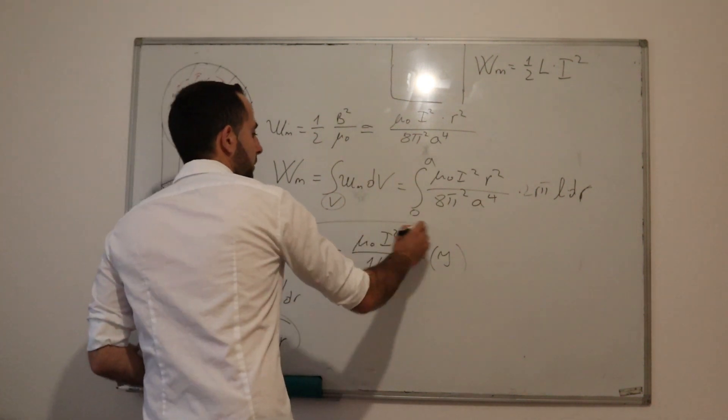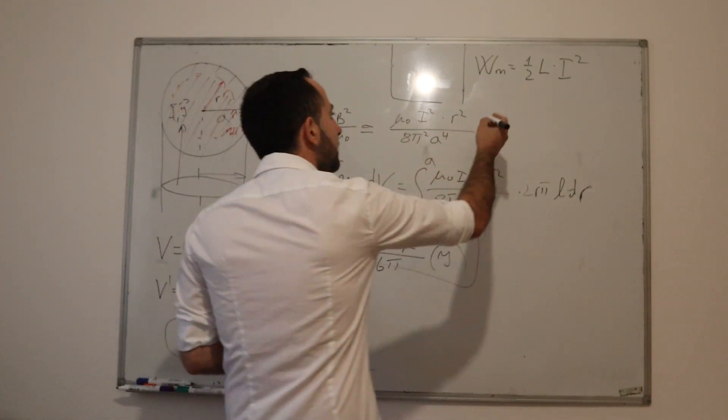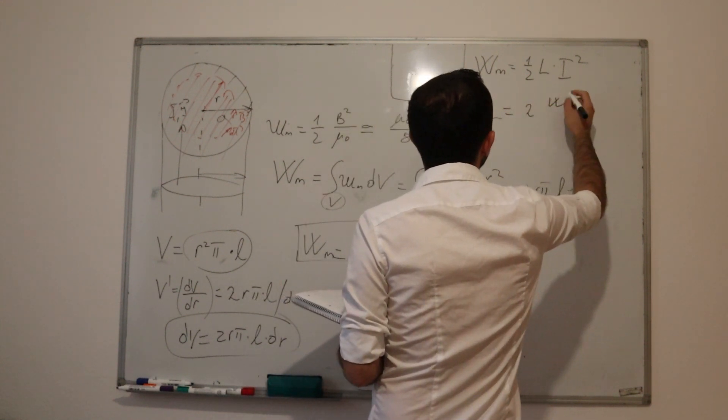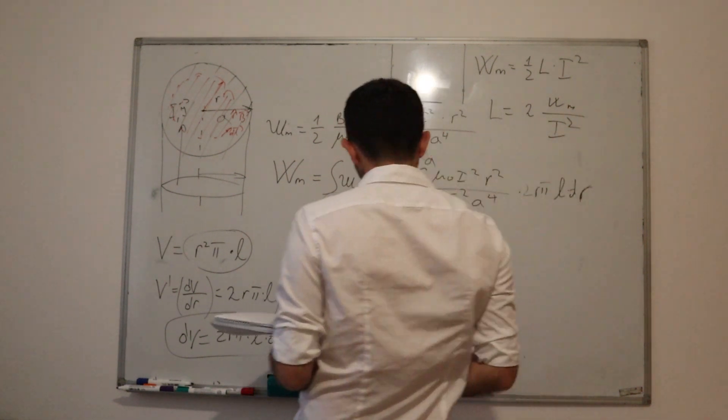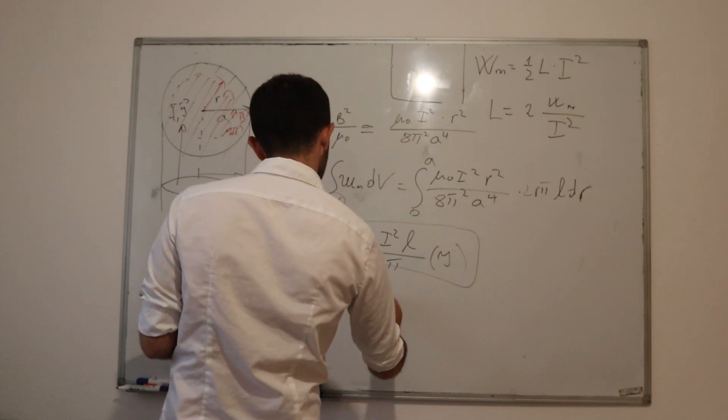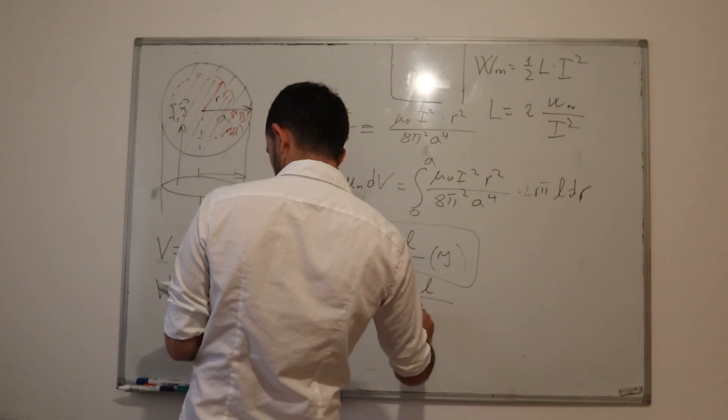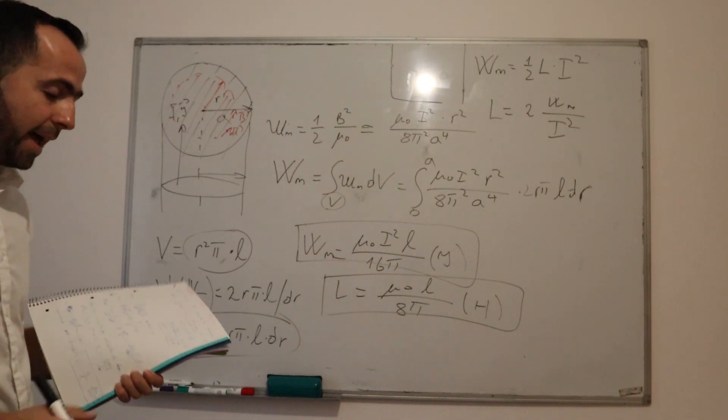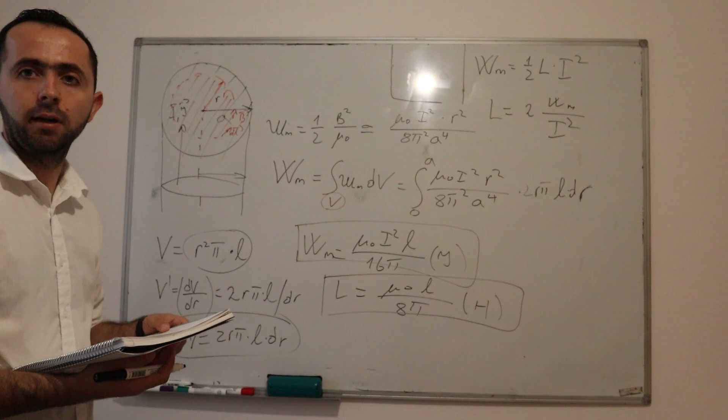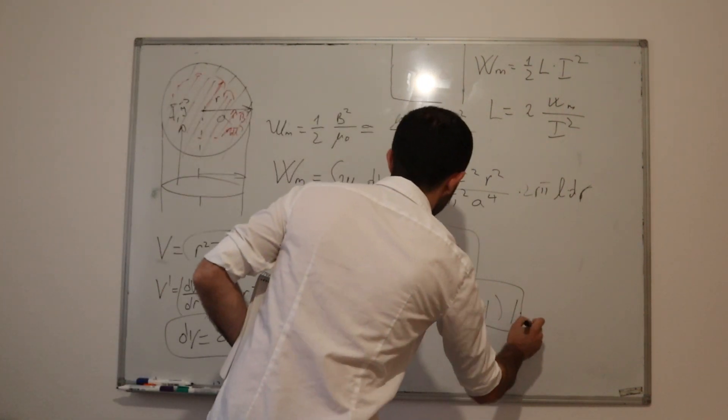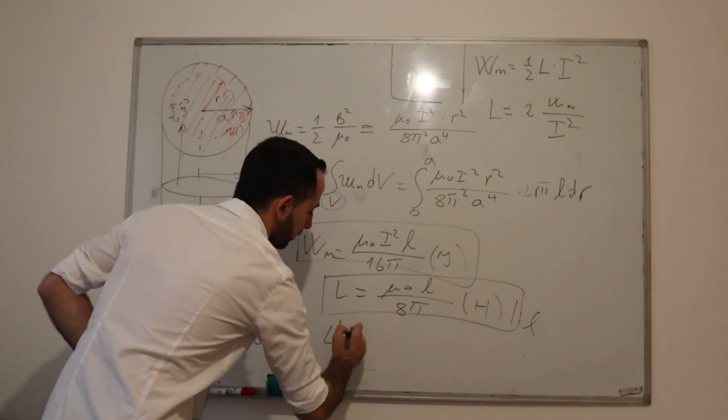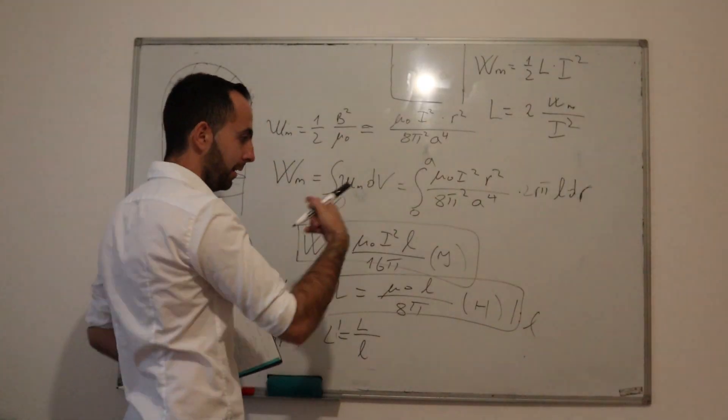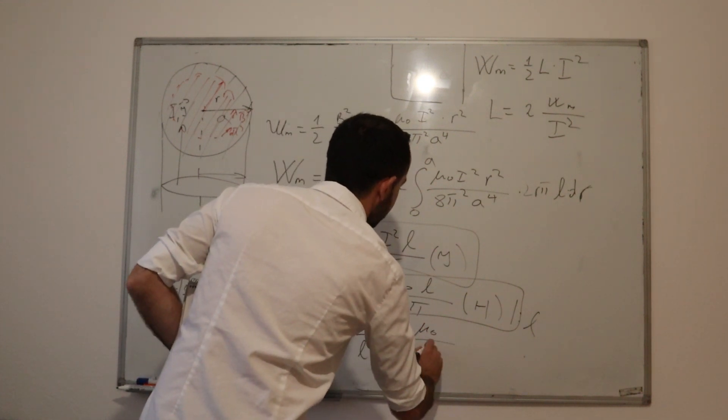After we have found the energy of complete conductor, we can calculate inductivity. Inductivity is 2 times W divided by I square. And we will get that our inductivity is μ₀L, which is the length of conductor, divided by 8π. We need also to find inductance per length of conductor. How do you find that? Simply, we will divide this with L.